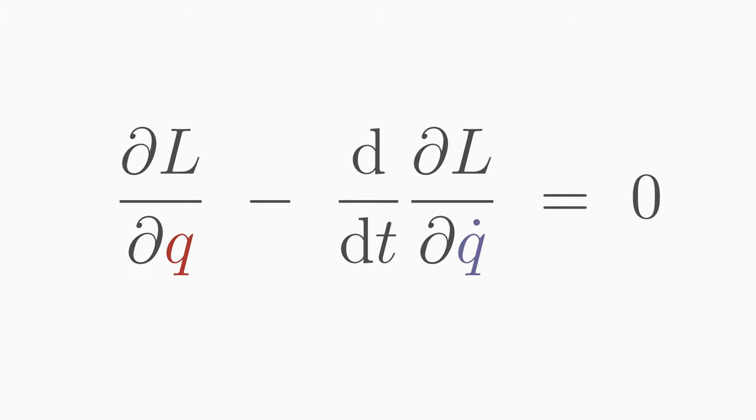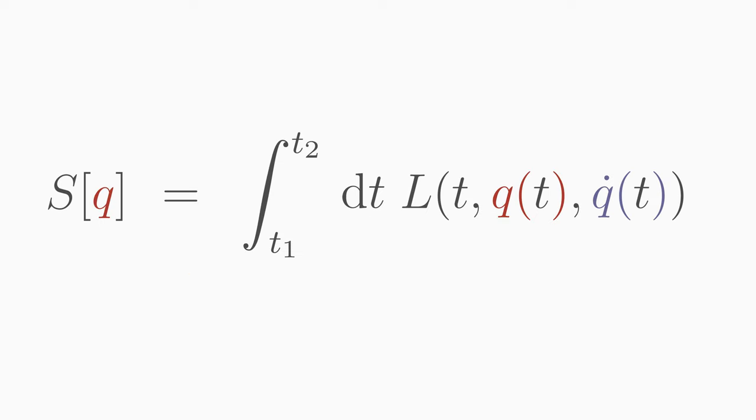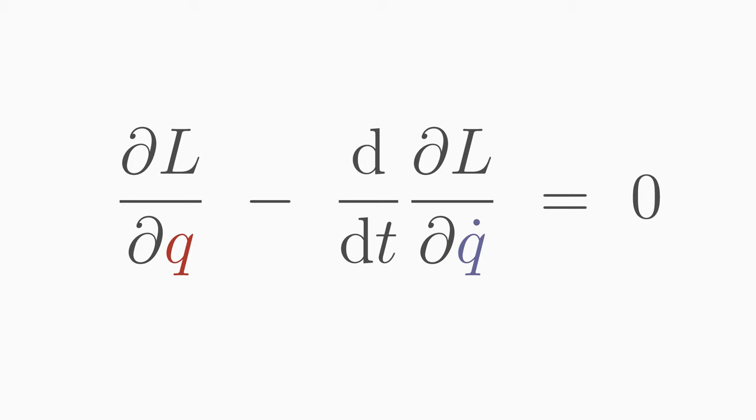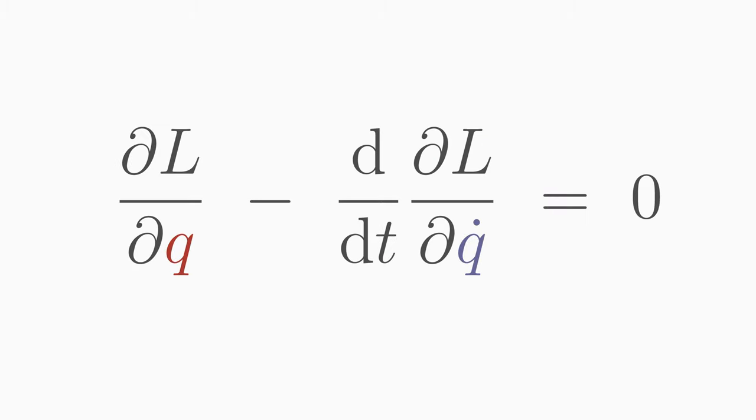It can be derived from the definition of the action and the principle that nature is extremal. In the video description you will find the link to the derivation. In this video we just want to know how to determine the unknown path q of t using the Euler-Lagrange equation.